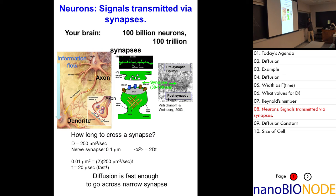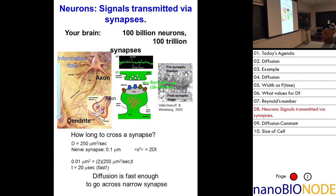What are the units of D? x-squared equals 6Dt, so D is length-squared per time — for example, 250 microns squared per second. The synapse gap is about 20 to 40 nanometers. Convert nanometers to micrometers and plug into x-squared = 6Dt.